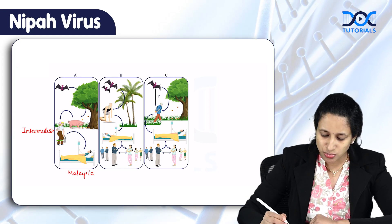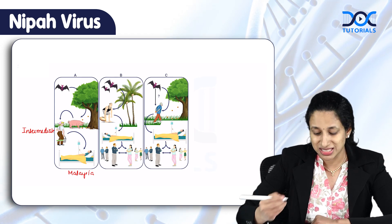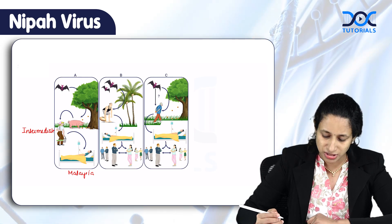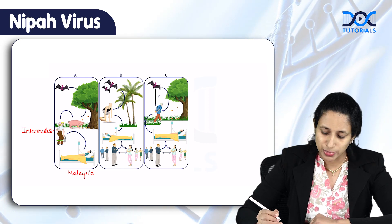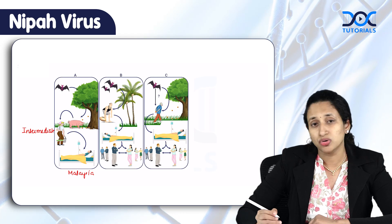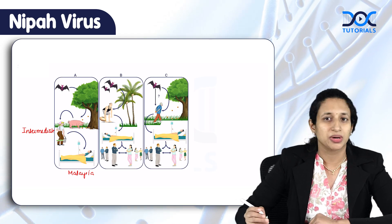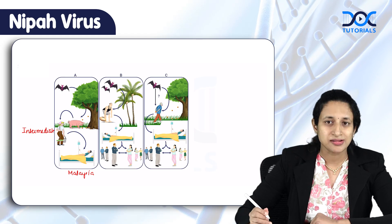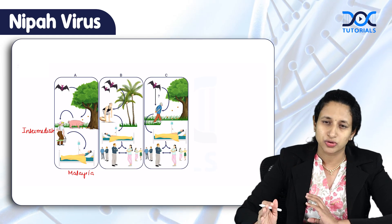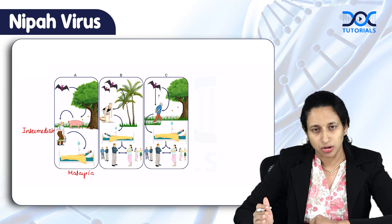The second instance of transmission is also because of the sap collected from palm fruit. The third is that the virus is nosocomially transmitted once a patient acquires the infection by either route. We tend to see a lot of nosocomial spread many times even before diagnosis, as the patient comes in contact with a lot of other people.